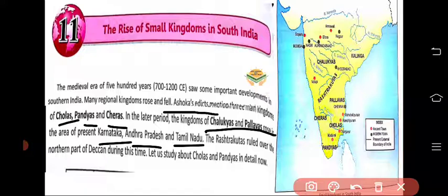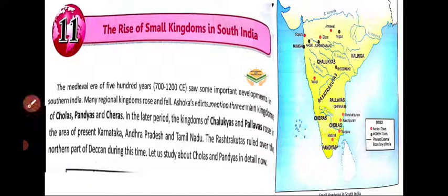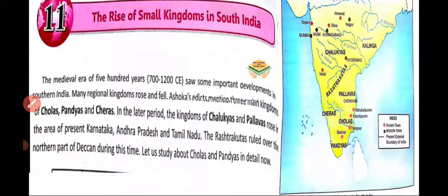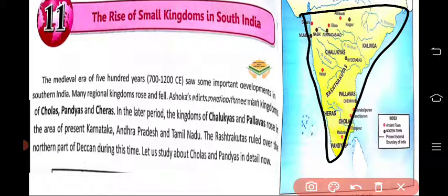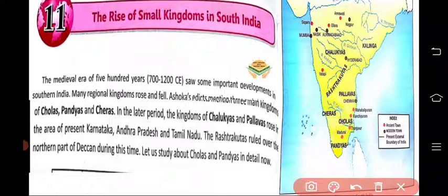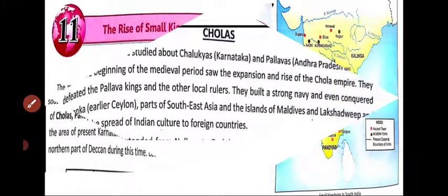The Rashtrakutas ruled over the northern part of the Deccan during this time — we have already seen them in Chapter 10. Looking at the map area-wise, you can see the Cholas, Pandyas, Pallavas, Cheras, and Rashtrakutas, who are in the northern part of the peninsular plateau, also called the Deccan Plateau. Today we will basically study two main dynasties: Cholas and Pandyas.